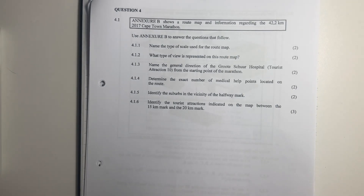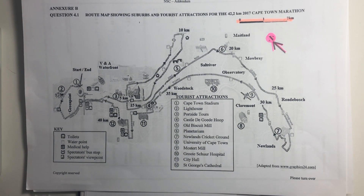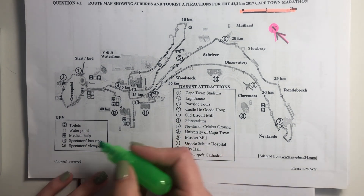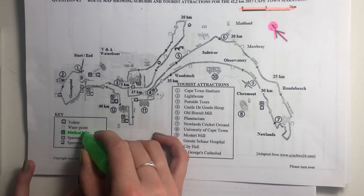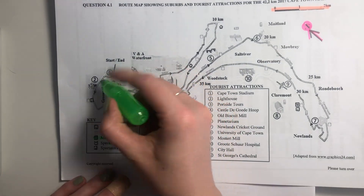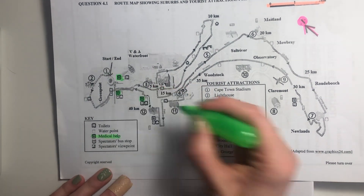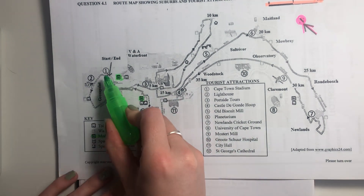4.1.4: determine the exact number of medical help points located on this route. So again, what I would do here — get yourself a highlighter. Let's firstly go see what medical help points look like. So they look like that. Let's start. As we start, here's our first one, there's our second one, third one, fourth one. But let's see how this marathon actually goes.